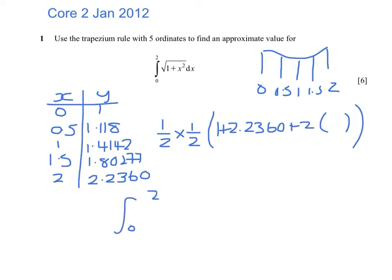So the integral from 0 to 2 of root 1 plus x squared with respect to x is 2.976, or 2.98 to 3 significant figures.